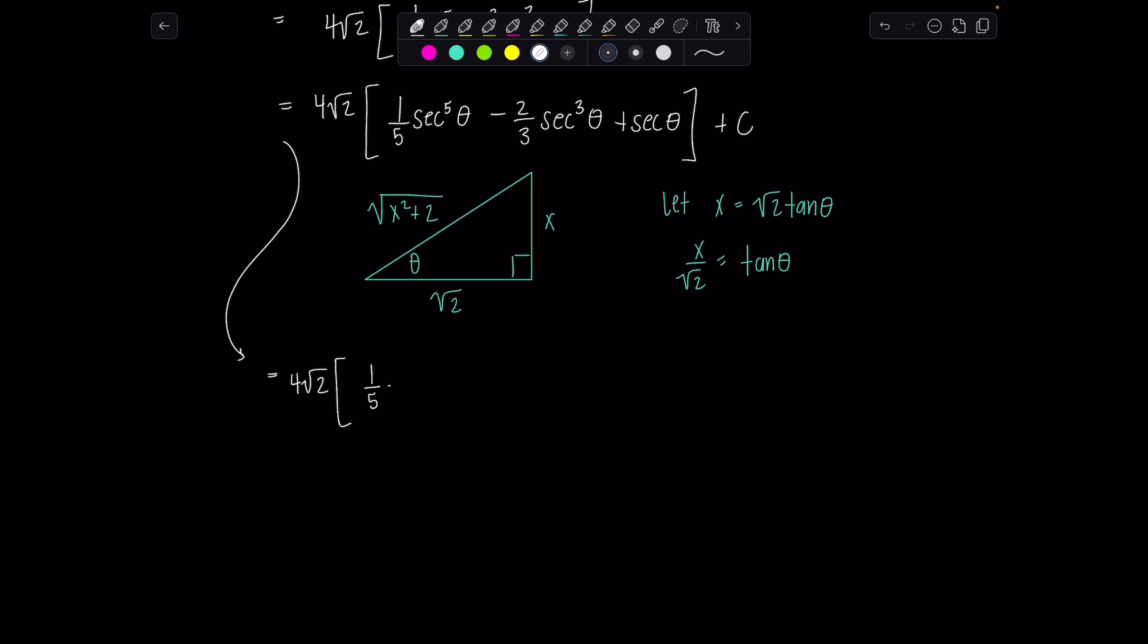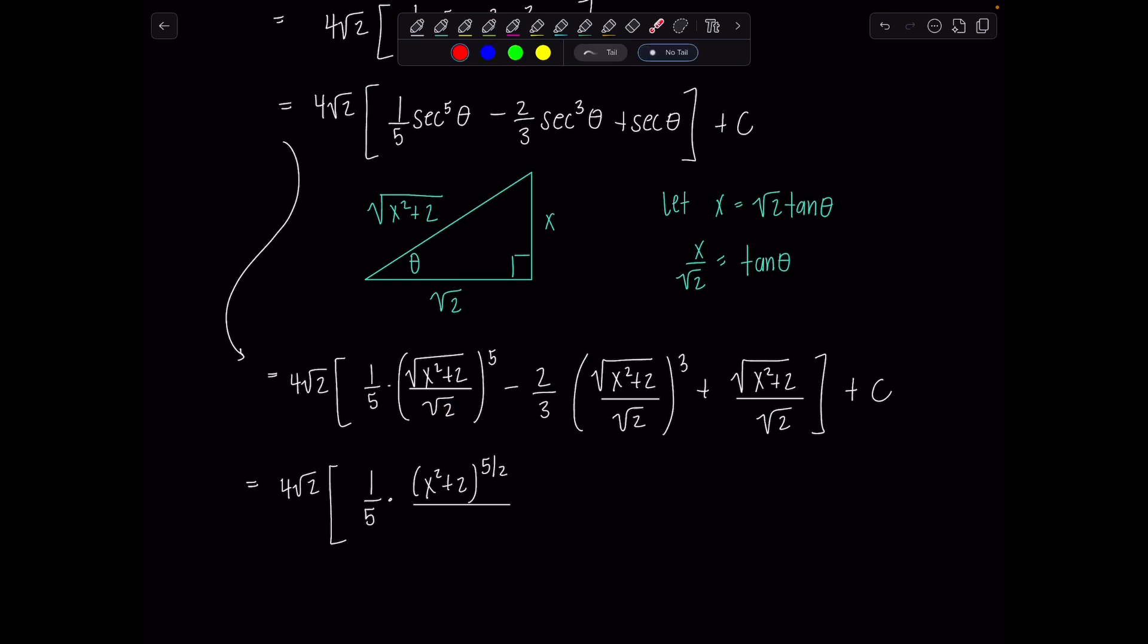So this is four rad two times one fifth secant theta is ratio of hypotenuse over adjacent. So this is going to be square root x squared plus two over square root of two to the fifth minus two thirds. This is going to be square root x squared plus two over square root of two cubed plus, and then just plain old secant theta, square root x squared plus two over square root of two, and then I have plus c. So now let's clean up. We have here four rad two times one fifth. I'm going to write the numerator as x squared plus two to the five halves. I just think that looks better. Or actually, you don't get to. You do what your instructor says. You get to do you when you don't have to get graded by someone else.